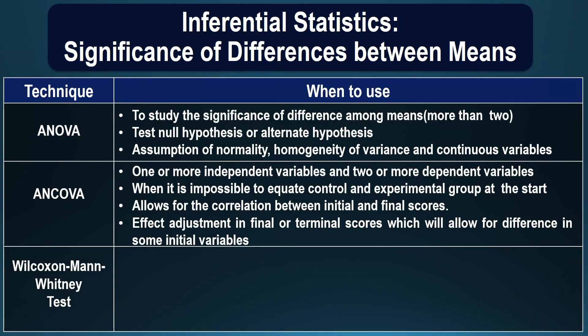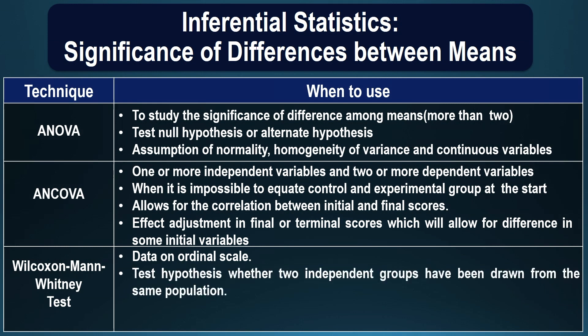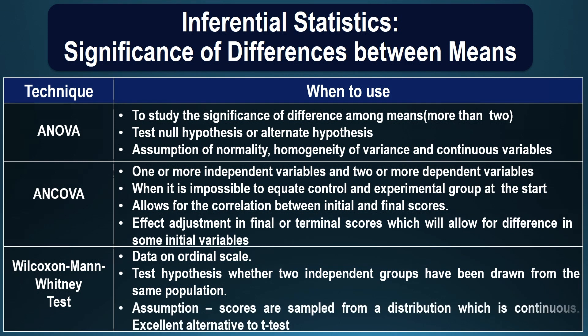The Wilcoxon-Mann-Whitney test can be used when data is available on ordinal scale. It allows the researcher to test the hypothesis whether two independent groups have been drawn from the same population or different populations. The assumption is that scores are sampled from a continuous distribution, and it is an excellent alternative to the t-test.